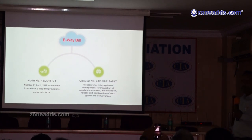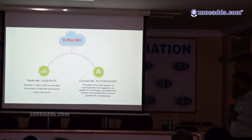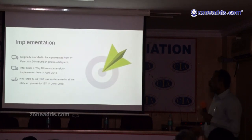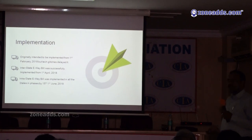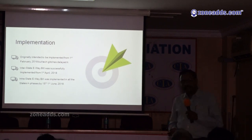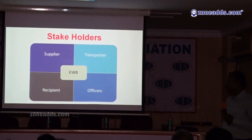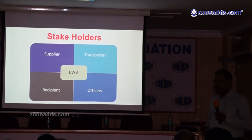Circular 41 deals with the interception and verification procedure of goods, conveyance, and documents by the department officer. Originally, it was intended to be implemented from February 2018, but it started on 1st April, and by 15th June all states had implemented it for interstate movement. There are four stakeholders in the E-way bill system: supplier, recipient (customer), transporter, and officers.